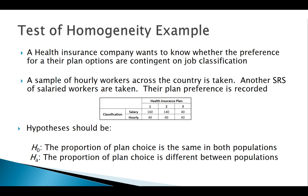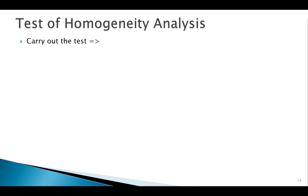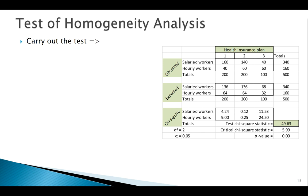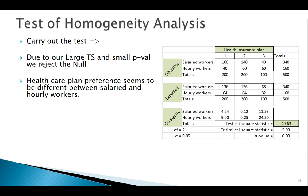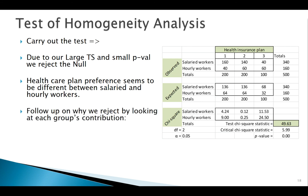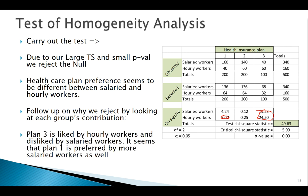We're not going to focus too much on the analysis mechanics here — we've seen in a previous example how to calculate expected values, contributions, test statistic, and p-value. The focus here is: this is a test of homogeneity. So how do we interpret a large test statistic and small p-value? We reject. That tells us the proportions of plan preferences are different. Where are they different? We follow up by looking at large contributions.